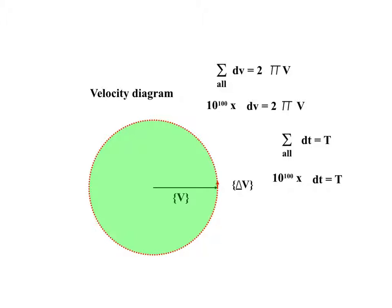Similarly, the sum of all the dt's equals T, the period. That is, the period of time for one complete cycle around the velocity diagram. In other words, 1 googol times dt equals capital T. If we divide one equation by the other, the googols cancel out, and we get dv over dt equals 2πv over T.